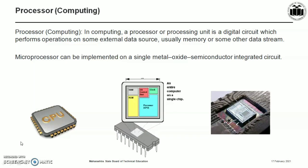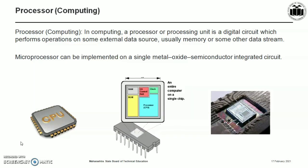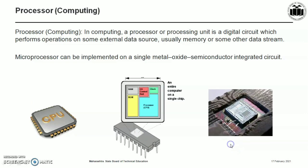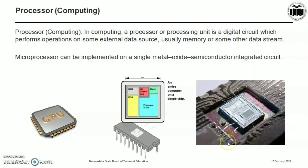If you zoom into the chip, you can see the central processing unit, RAM, ROM, different IO peripherals, and clock circuitry. Along with the CPU, this entire circuit is manufactured onto a single silicon chip. In this picture, you can see the integrated circuit's inside view.